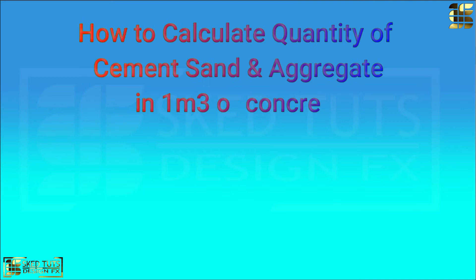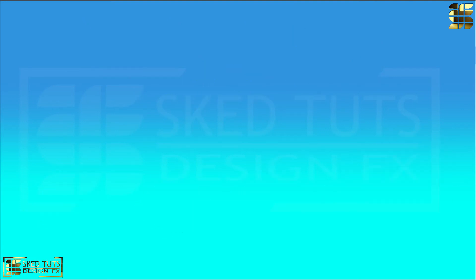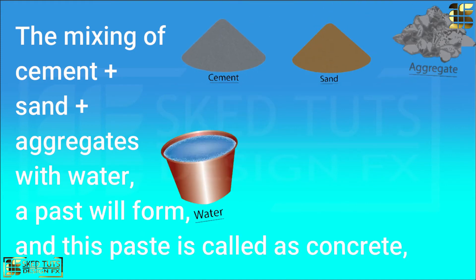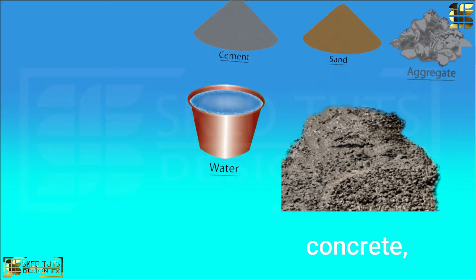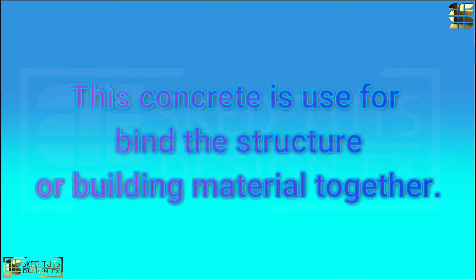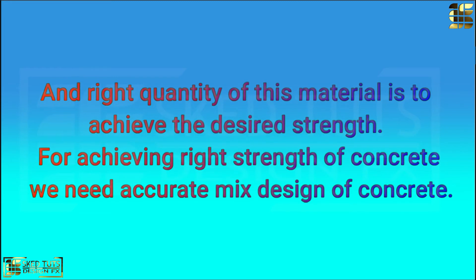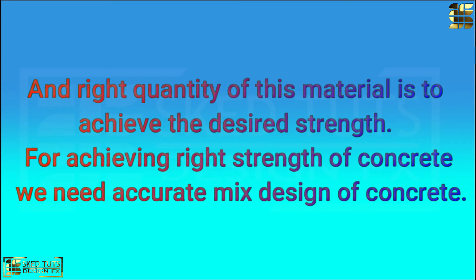How to calculate quantity of cement, sand, aggregate in one cubic meter of concrete. The mix of cement plus sand plus aggregate with water, a paste will form and this paste is called as concrete. This concrete is used for binding the structure or building material together. And right quantity of this material is to achieve the desired strength. For achieving right strength of concrete, we need calculate mix design of concrete.